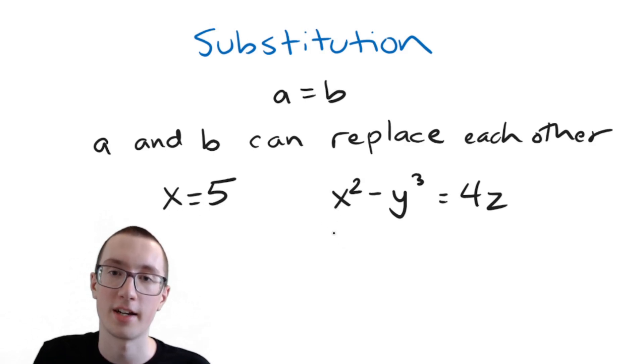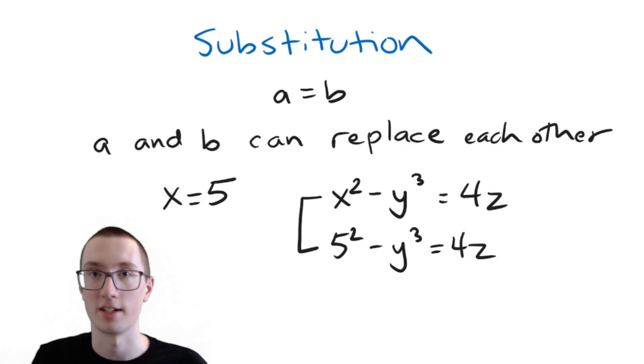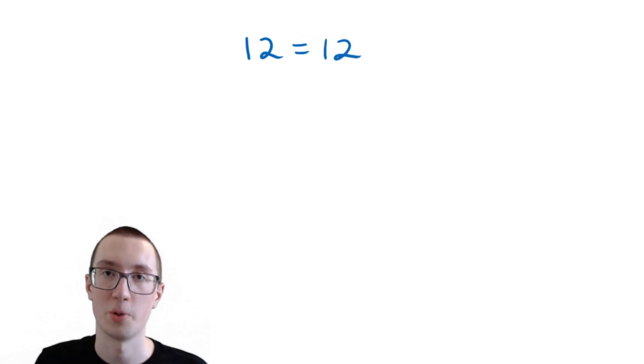So if we replaced X with 5 in this equation, we now have 5 squared minus Y cubed equals 4 times Z. These two equations right here are the same because you can replace X with 5 and 5 with X. So let's look at our first example of putting this to use. We're going to identify in each of these problems what property of equality we're dealing with.